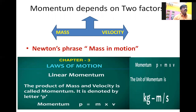This is known as Newton's phrase 'mass in motion.' Linear momentum means the product of mass and velocity is called momentum. Momentum is denoted by the letter P. So P is equal to mass into velocity: P = mv. The units of momentum are kg meter per second.